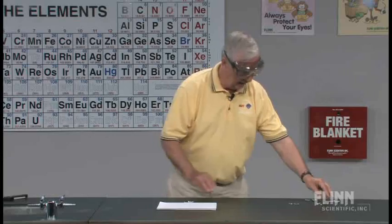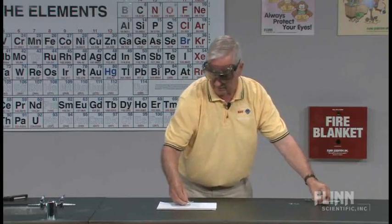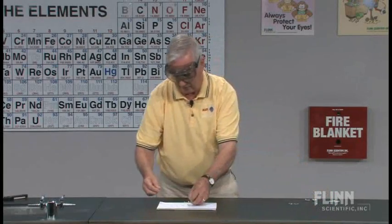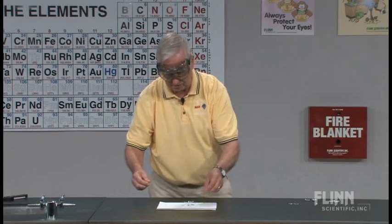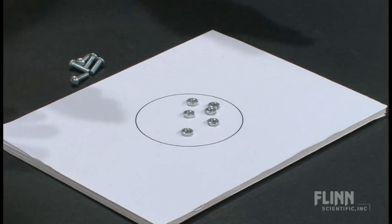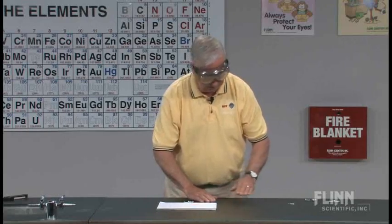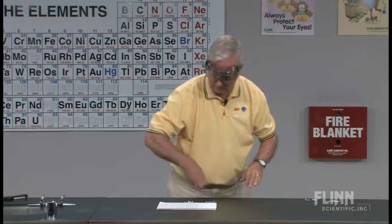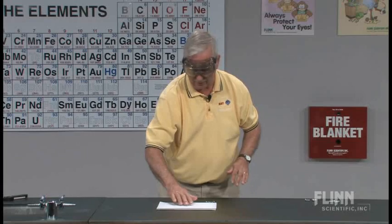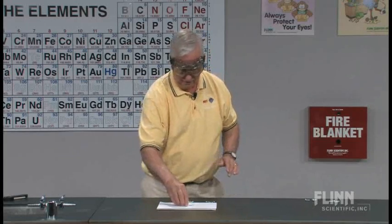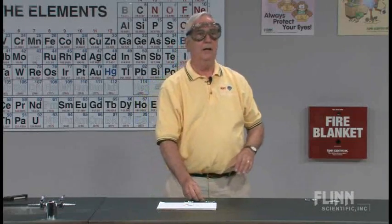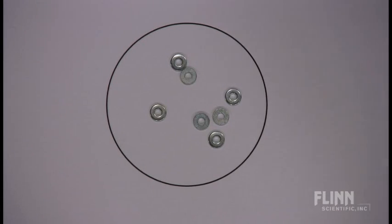Now we can say we have an element nut. Students generally have some sort of a connection — they are familiar with bolts and nuts. We can say this is the second element that we have. We can go one step further and go to a collection of washers — element W. And what we have here is a third element. So we have three elements: bolts, nuts, and washers.